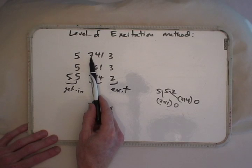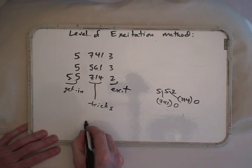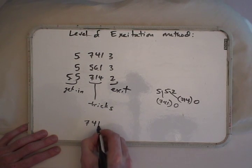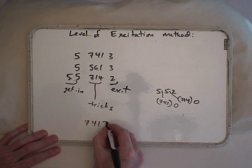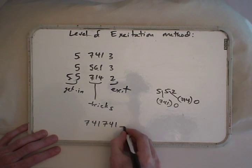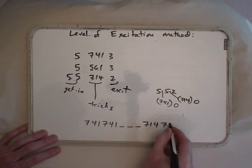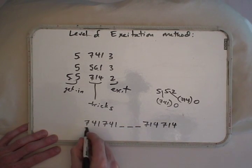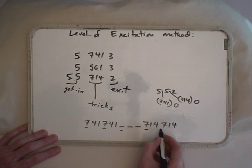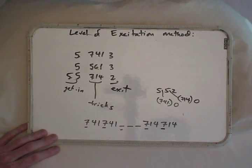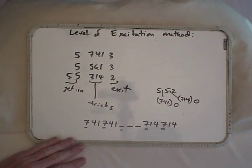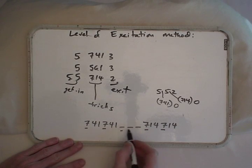If you wanted to do 741, 741, and then in exactly 3 throws end up in 714, because for some performance reason you want the 7s to be 3 throws apart, this method doesn't immediately tell you what you need to do in here in order to do that.